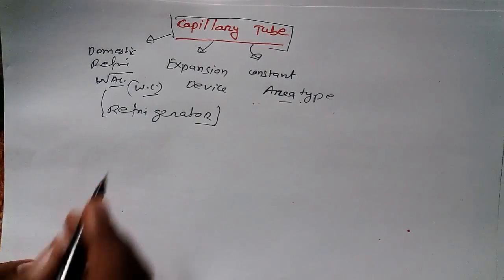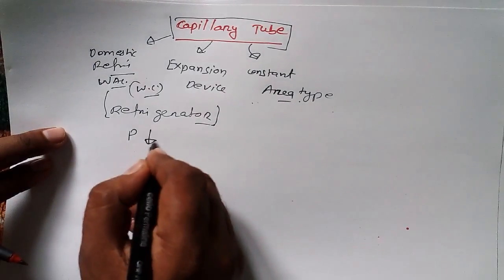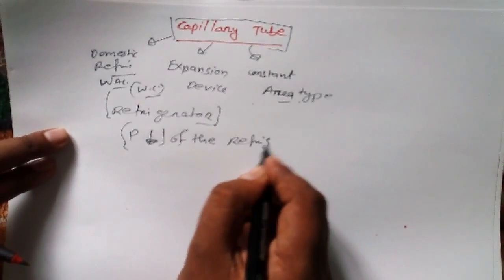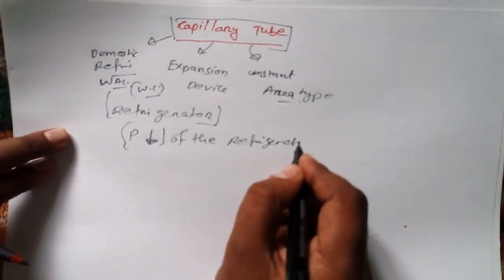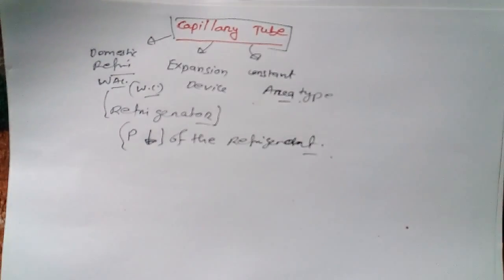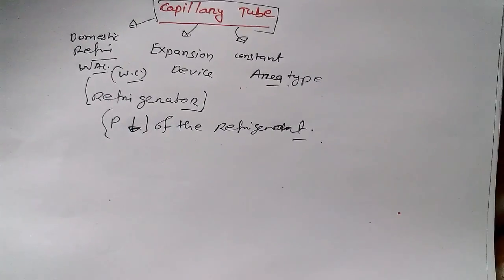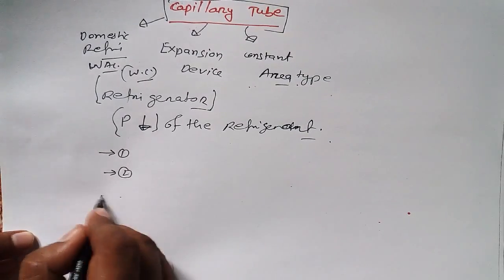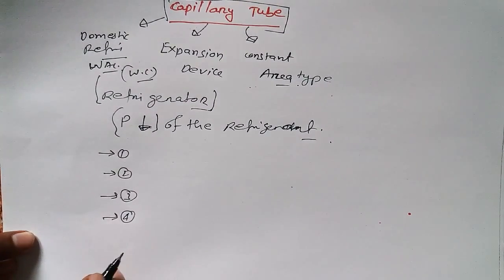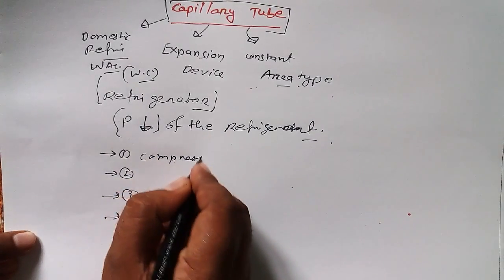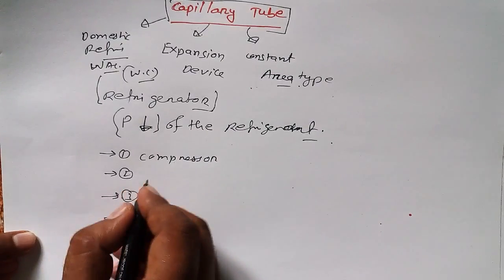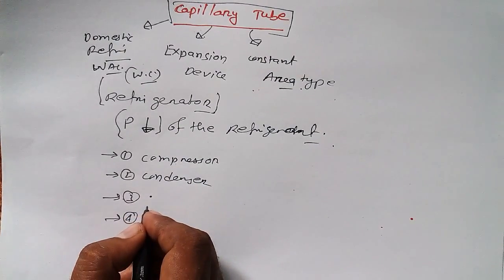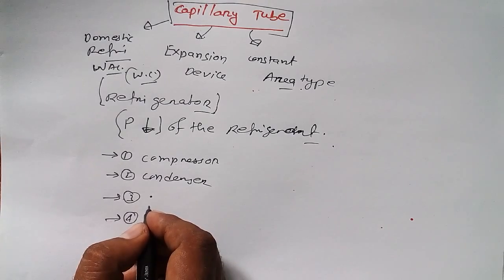Basically, the capillary tube is used to decrease the pressure of the refrigerant. In a refrigerator there are four most important devices: one is the compressor, another is the condenser, then we use the capillary tube — which can be constant area type or constant volume type depending on our requirement.